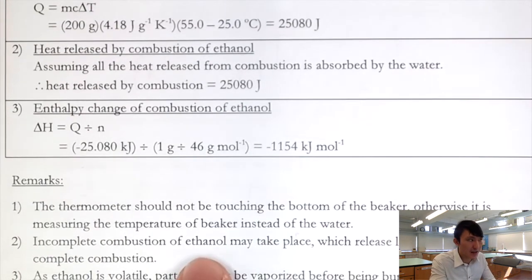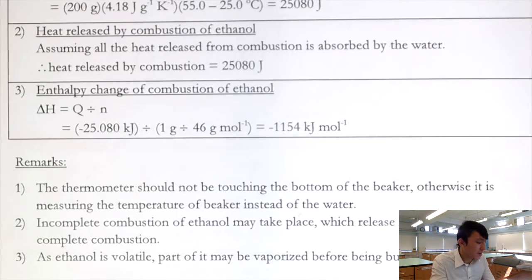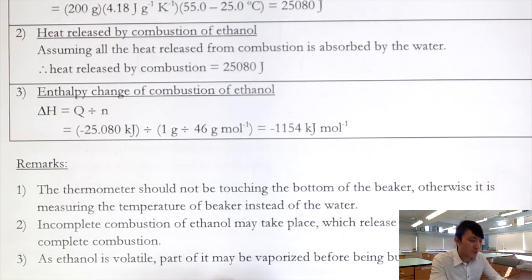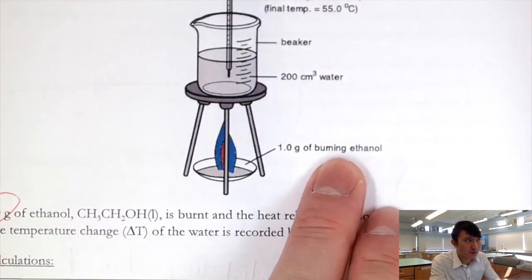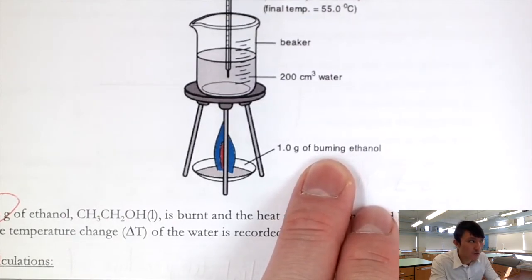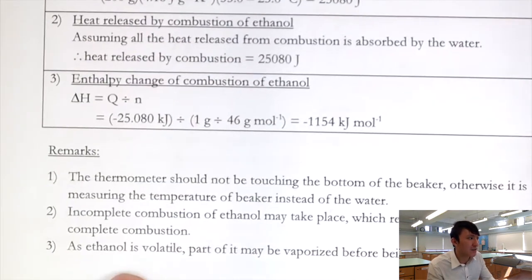Although ethanol is a clean-burning fuel likely to undergo complete combustion, there is still a chance of incomplete combustion. Additionally, ethanol is volatile, so some of the 1 gram weighed may have vaporized during transfer, leading to an underestimated result.